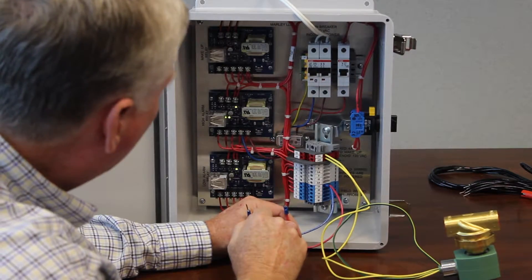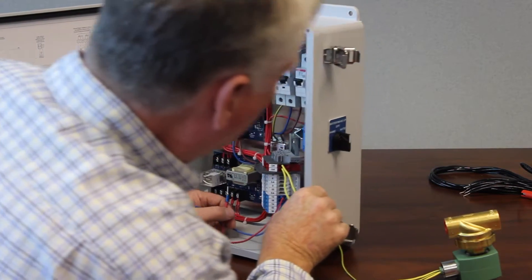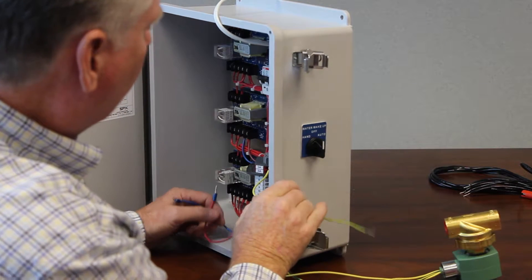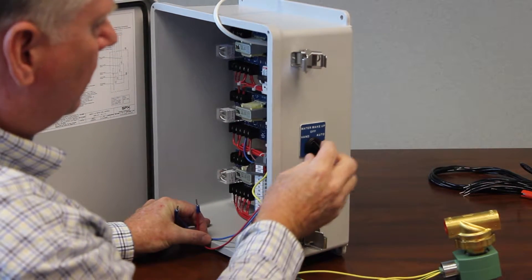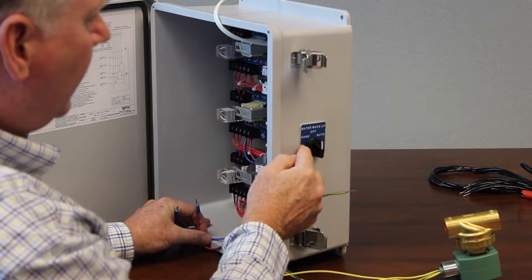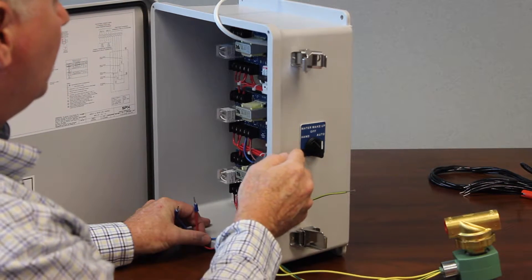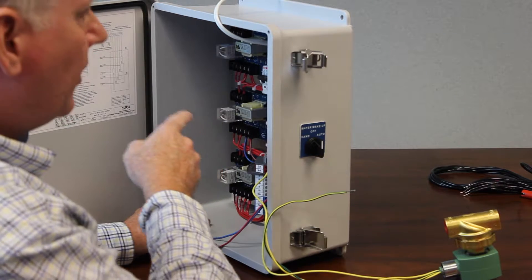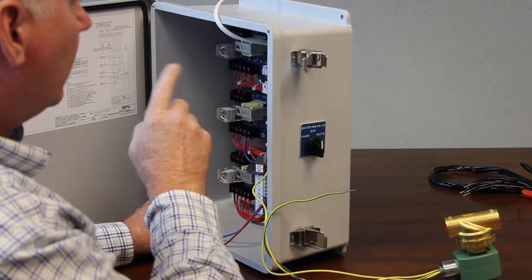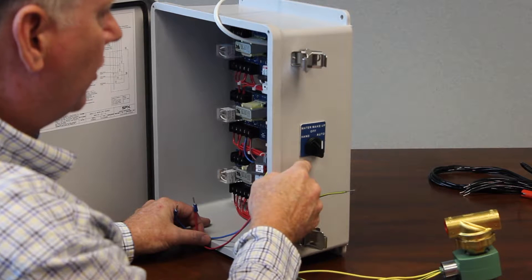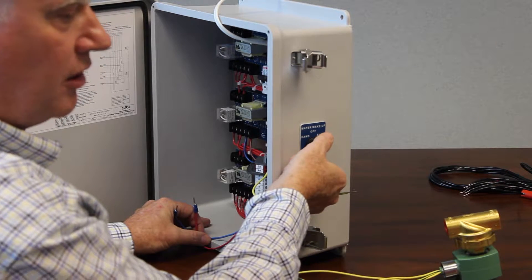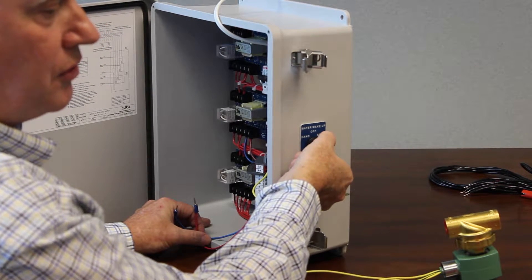So we got power to everything. My switch is in the off position. The first thing I'm going to do is I'm just going to throw this to hand. And when I throw this to hand, we bypass the circuit card that's in here, and we directly apply 120 volt power right to the solenoid using this switch. So when I put this in hand, it should come on. So you should hear this.